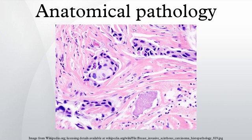Cytopathology involves the examination of loose cells spread and stained on glass slides using cytology techniques. Electron microscopy allows the examination of tissue at much greater magnification, enabling visualization of organelles within cells. Its use has been largely supplanted by immunohistochemistry, but it remains in common use for tasks such as diagnosis of kidney disease and identification of immotile cilia syndrome.